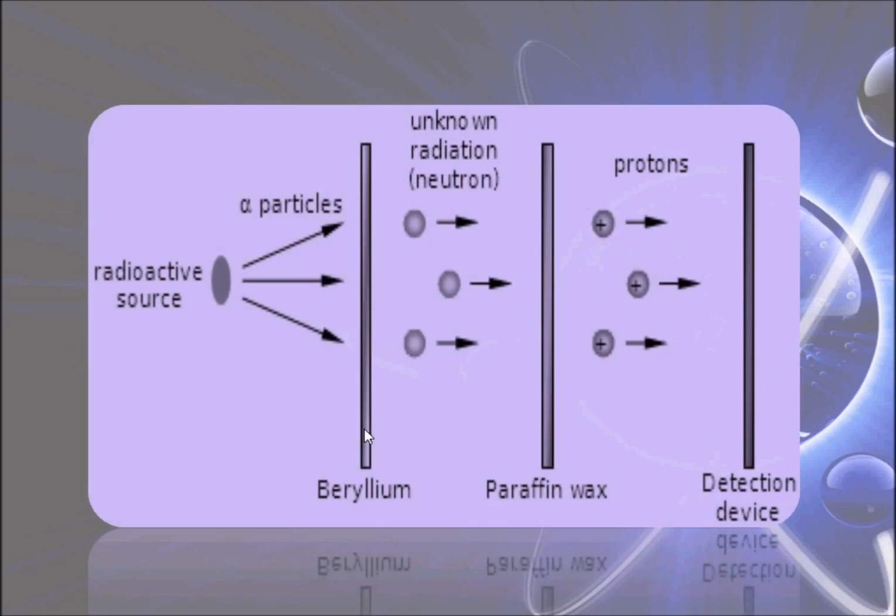So here you can see the picture, this is basically the picture of an experiment where beryllium and helium were struck to each other to form the unknown radiation that has the neutron. And there is a paraffin wax which has been kept here to filter out the protons.